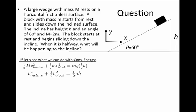This allows us to simplify a little bit if we remember that capital M equals twice little m, giving us: v-incline squared plus one-half of v-block squared equals one-half gh. We still have two unknowns here — the velocity of the incline and the velocity of the block — so we may seek out another equation.